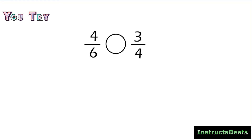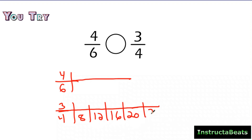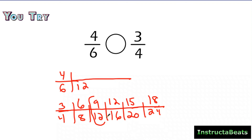Here we have a you-try problem — go ahead and pause the video. We're going to be comparing four-sixths and two-thirds. Pause the video, try it out, then push play to check your understanding. Hopefully you just paused it. Six is not a multiple of four, so I'm going to have to do my pattern method for both. Starting with four since it's a smaller digit: 4, 8, 12, 16, 20, 24. Then six: 6, 12 — I found my first common denominator right there. Numerators: 3, 6, 9, 12, 15, 18. My common denominator is twelve, so it should be eight-twelfths and nine-twelfths.